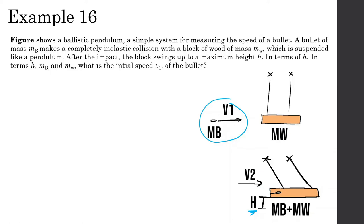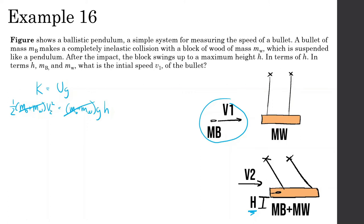When the bullet hits, all the kinetic energy of the embedded bullet turns into gravitational potential energy up to height H. So: 1/2 times (mass of bullet plus mass of wood) times V2 squared equals (mass of bullet plus mass of wood) times gravity times H. Mass cancels out, and we get V2 equals the square root of 2GH.